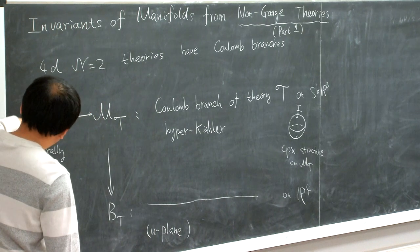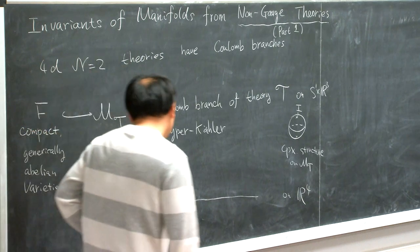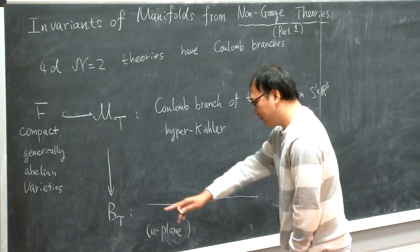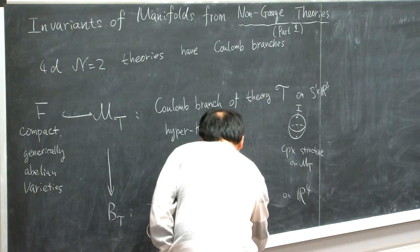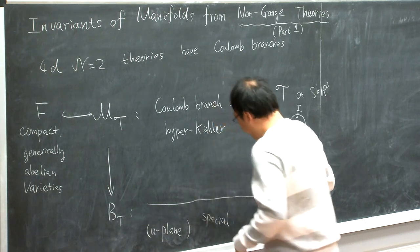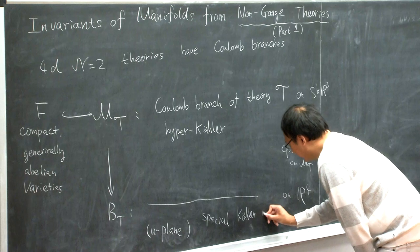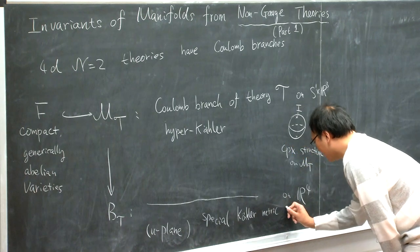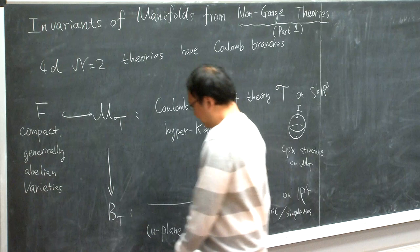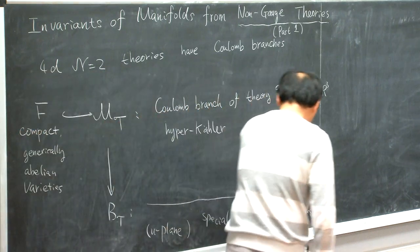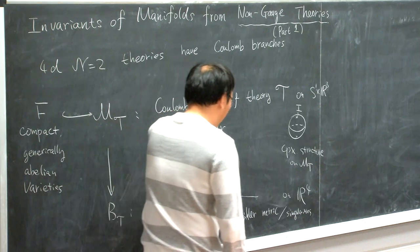The fibers have the property that they are always compact, and they are generically abelian varieties. This is, in a sense, why this particular complex structure is special. There are particular points on the base B where the fiber becomes singular, and you can observe this phenomenon from the base by looking at the special Kähler metric.